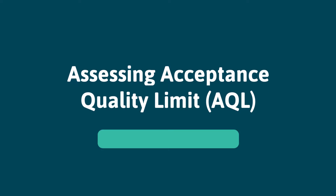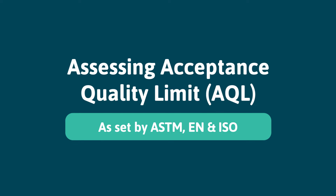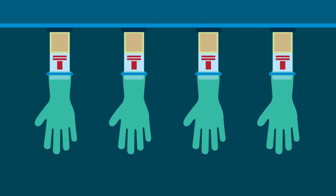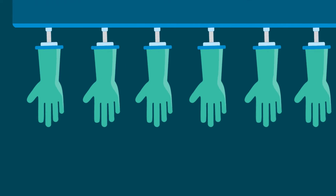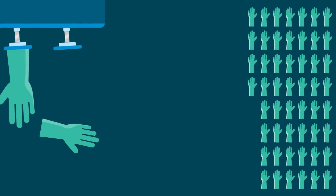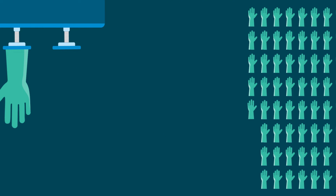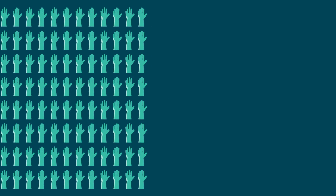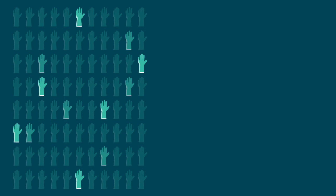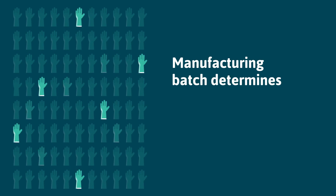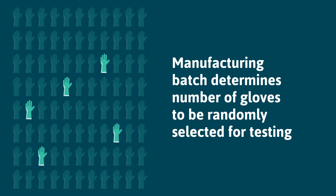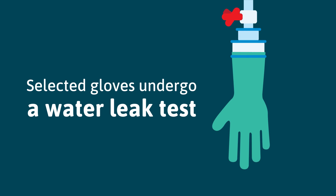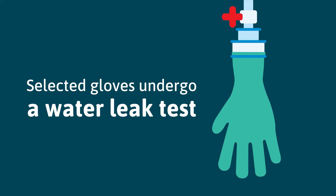AQL is a quality assurance measure set by ASTM, EN, and ISO to ensure the gloves you wear are free from pinholes. AQL measures quality by determining the highest number of pinhole defects deemed acceptable in a manufacturing run. A sample size dependent on the manufacturing batch determines the number of gloves to be randomly selected for testing. Selected gloves then undergo a water leak test to check for pinhole defects.